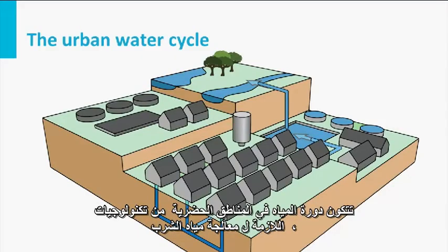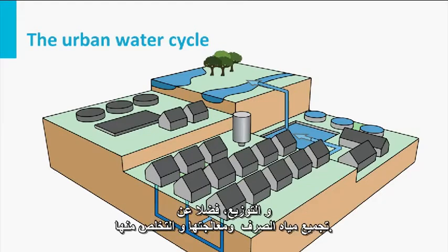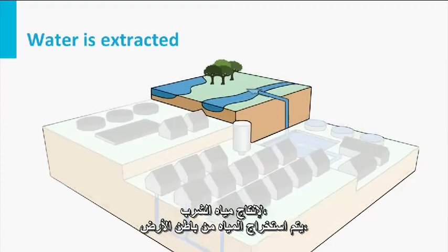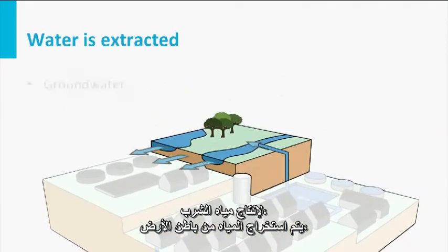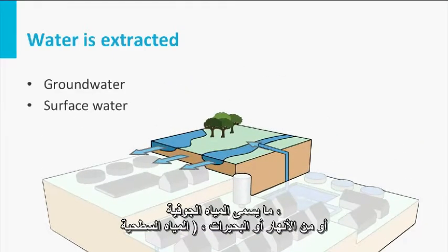The urban water cycle consists of technologies needed for drinking water intake, treatment, and distribution, as well as wastewater collection, treatment and discharge. To produce drinking water, water is extracted from the underground — so-called groundwater — or from rivers or lakes, the surface water.